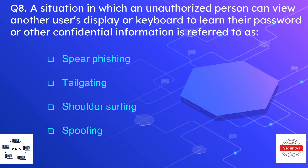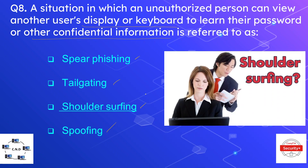Question number eight: a situation in which an unauthorized person can view another person's display or keyboard to learn their password or other confidential information is referred to as — the options are spear phishing, tailgating, shoulder surfing, and snooping. The correct answer is shoulder surfing, which means looking over someone's shoulder to see their display or password and gain confidential information.